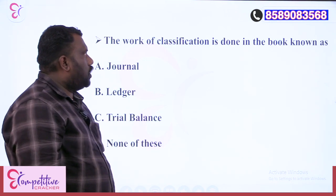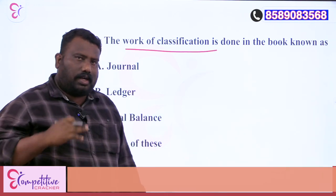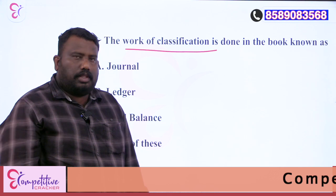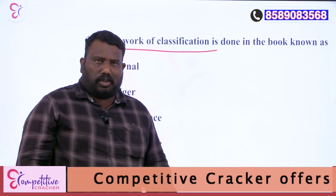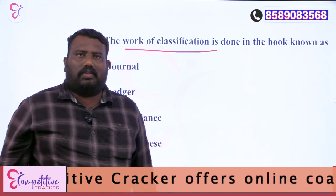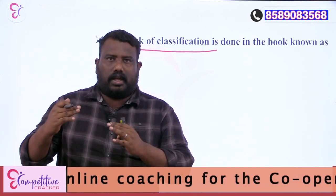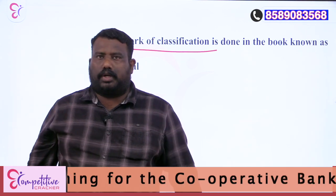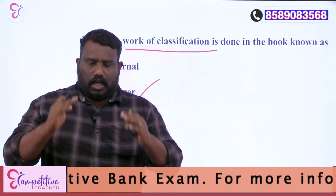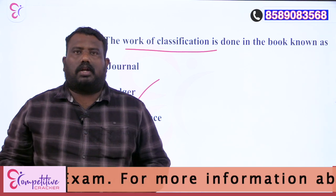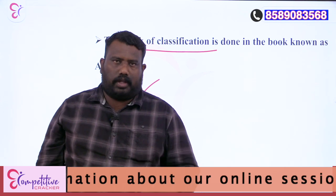The next question: the work of classification is done in which book? The option is Journal. The option is Ledger. The option is Trial Balance. The option is None of these. Accounts are organized head-wise — each account groups similar transactions. The answer is Ledger.